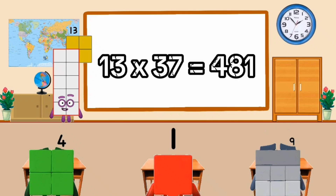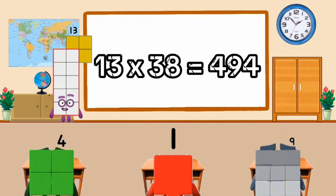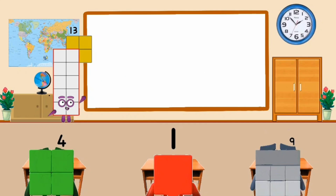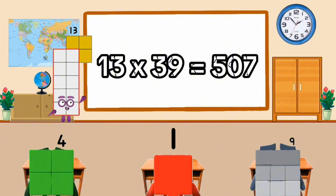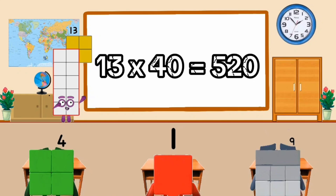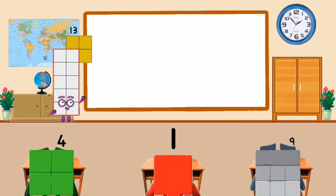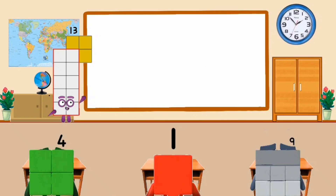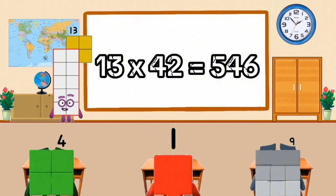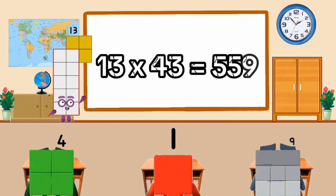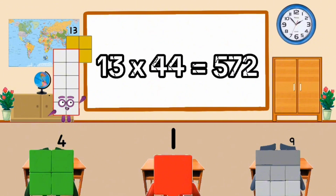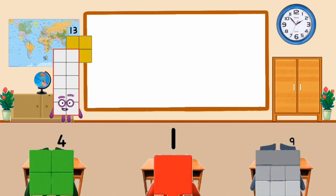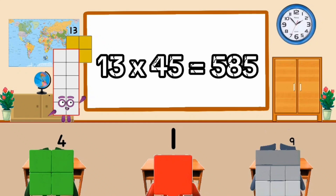13 times 37 equal 481. 13 times 38 equal 494. 13 times 39 equal 507. 13 times 40 equal 520. 13 times 41 equal 533. 13 times 42 equal 546. 13 times 43 equal 555. 13 times 44 equal 572. 13 times 45 equal 585.